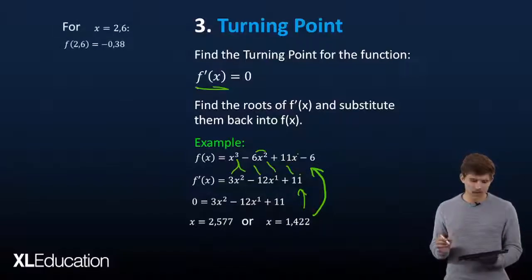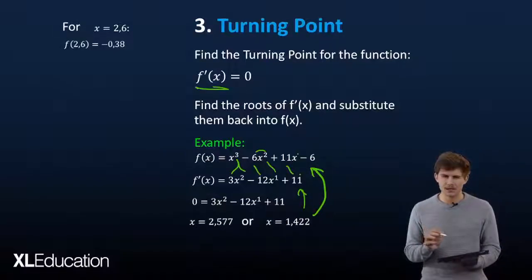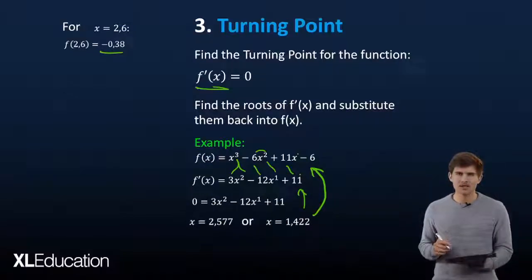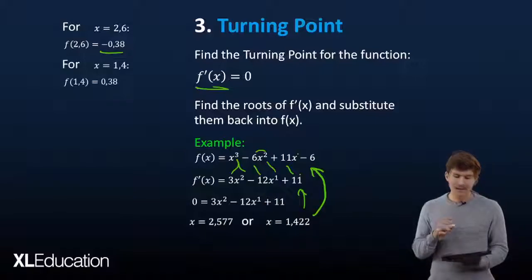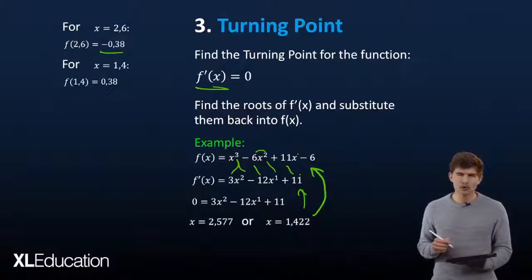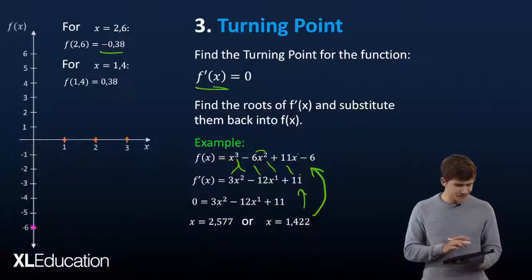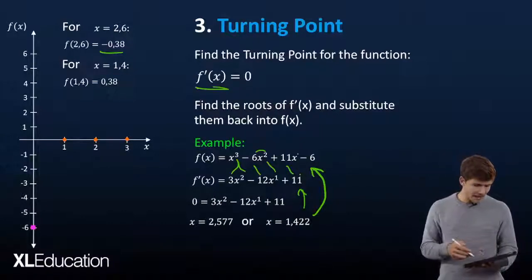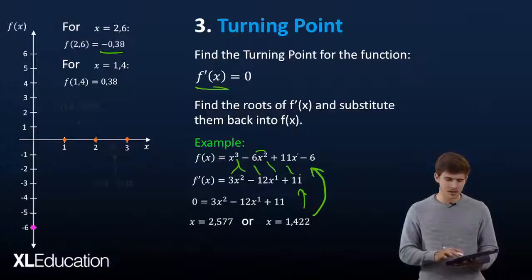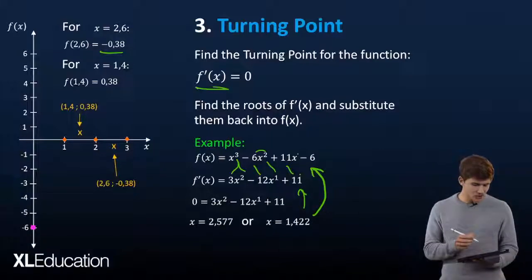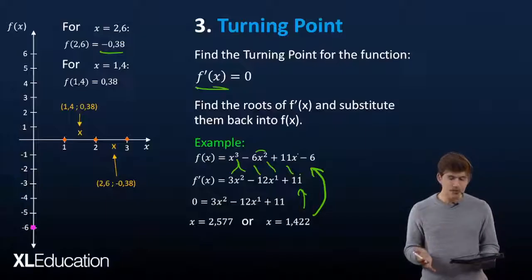For x equals 2.6, that gives us a y value of minus 0.38, and x equals 1.4 gives us 0.38. So plotting those on our axes, our turning point at 1.4 comes in just above the x-axis and at 2.6 just below. Now the last thing on our shopping list is the point of inflection.